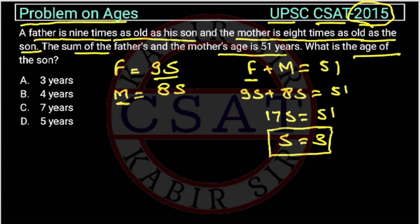What is the age of the son? The age of the son is 3 years. So the answer is option A. Easy question — you just need to form the mathematical equation, put in the values, and you will get the answer.